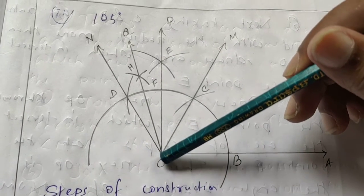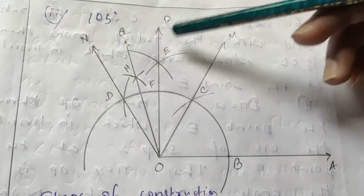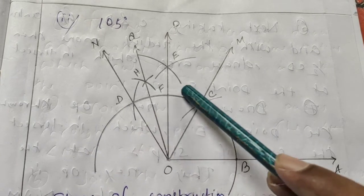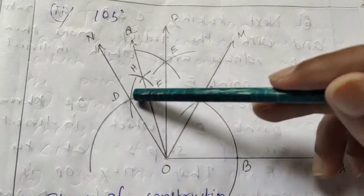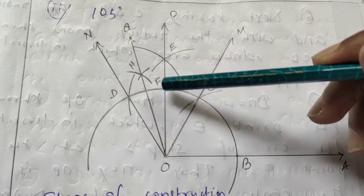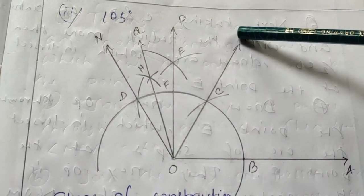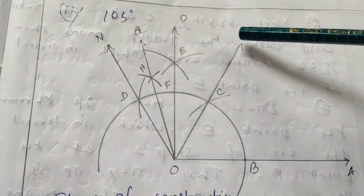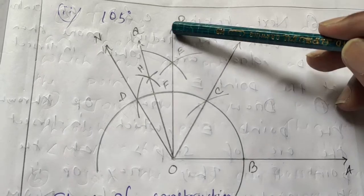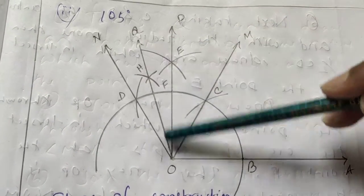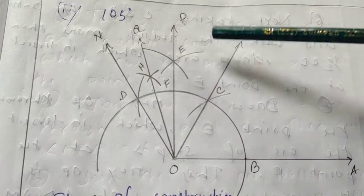Step seven: draw ray OP through point E. This ray OP cuts the arc of the circle from step one at point F. Ray OP is the angle bisector of angle NOM. Since NOM was 60 degrees, ray OP bisects it so angles NOP and POM are both equal to 30 degrees.